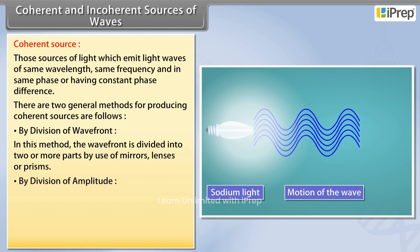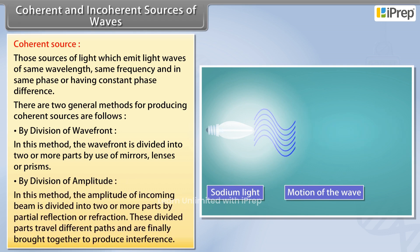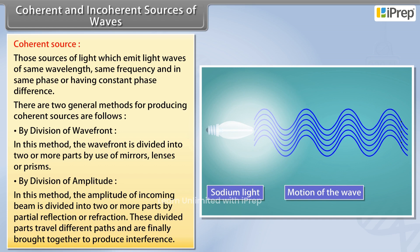By division of amplitude, in this method the amplitude of incoming beam is divided into two or more parts by partial reflection or refraction. These divided parts travel different paths and are finally brought together to produce interference.